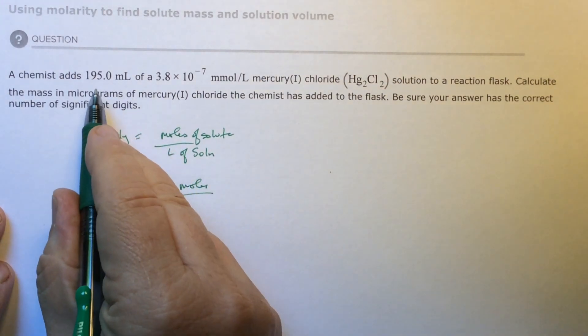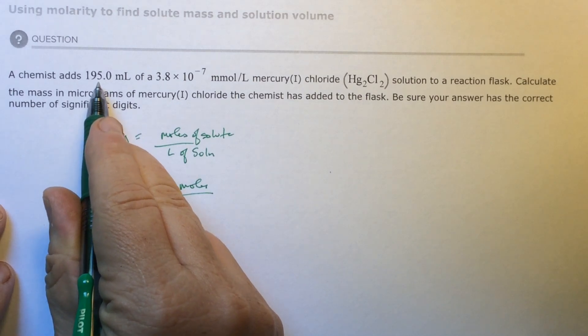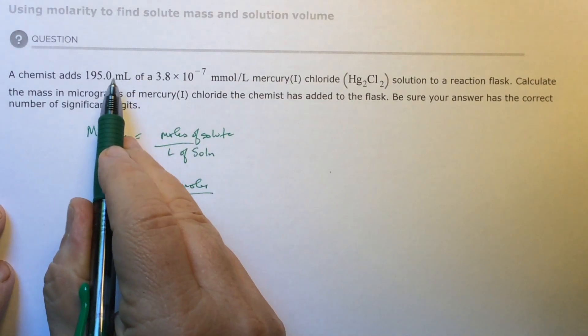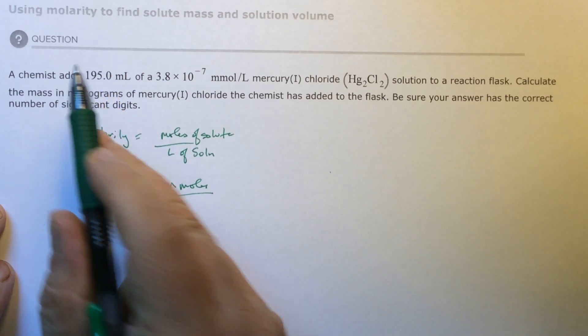They give us 195 mils of solution. How many liters is that? A milliliter is one thousandths of a liter, so you're going to divide by a thousand.